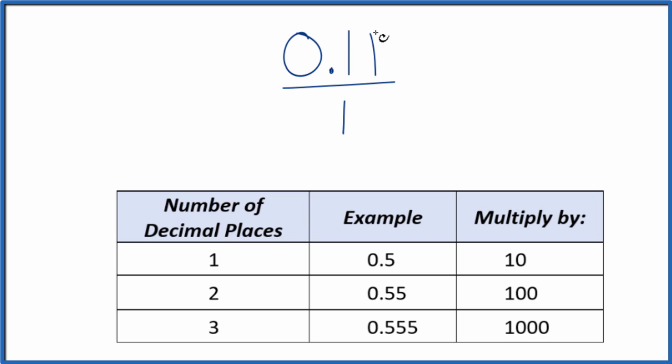We need to get 0.11 to a whole number. And since we have two decimal places, let's multiply that by 100. So 100 times 0.11, that gives us our whole number. That equals 11.